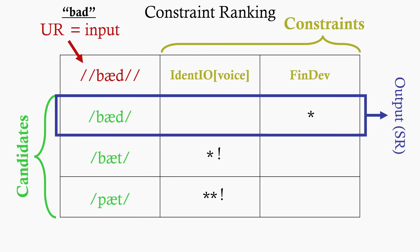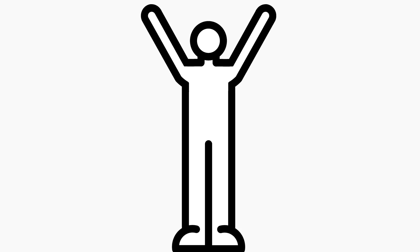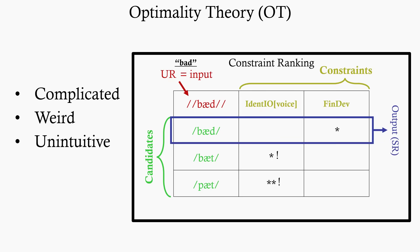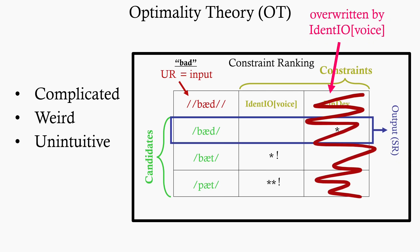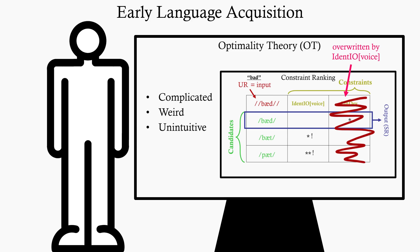Now that clever brain of yours kicks in again, and you ask, why in the world would you want a model like this? It is unnecessarily complicated and weird and unintuitive. Like, why insist that English has this secret, hidden, final devoicing constraint that just gets overridden in literally every single word? It feels so much easier to just say that that rule doesn't exist in English. And while I don't necessarily disagree with that criticism, I kind of get why this model is the way it is, and it's because of early language acquisition.